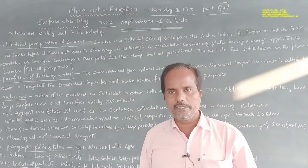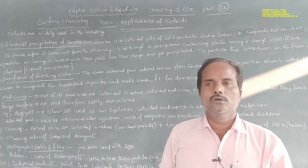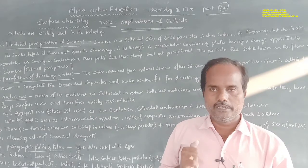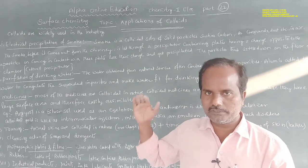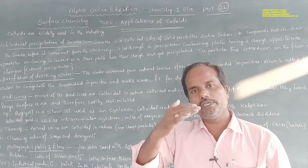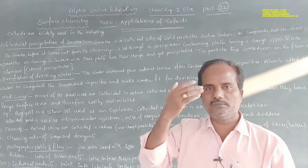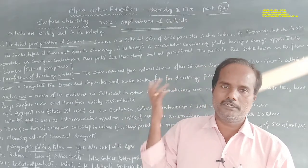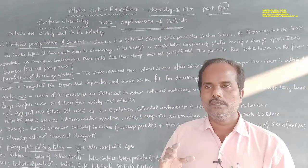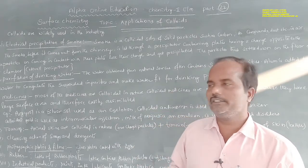This is a very useful industrial method to stop air pollution. As a result of this method, the smoke is separated from arsenic compounds, dust particles, and carbon compounds. Most of the pollutants can be separated by this method. The precipitated smoke particles settle down on the floor of the chamber.